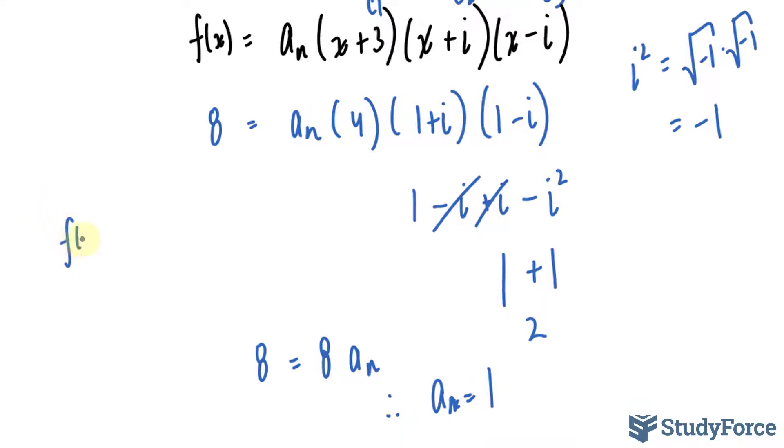Let's write our function down. Our function is f(x) equals, this substituted with 1, (x + 3)(x + i)(x - i).